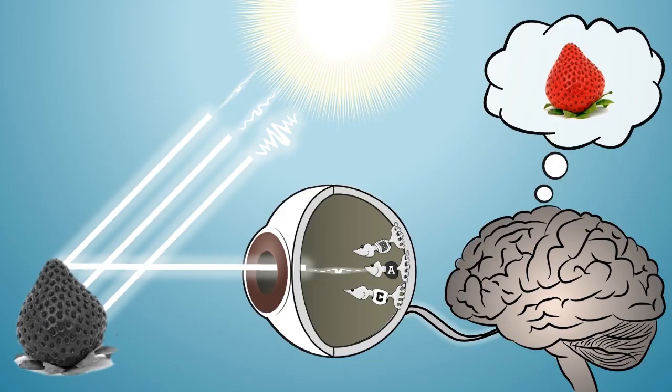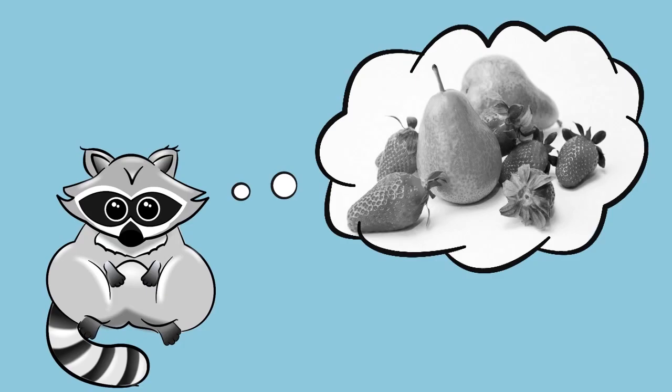Some animals have a much simpler retina with only one team of detectors. They can distinguish between light and dark, but see no color. They see the world in black and white.